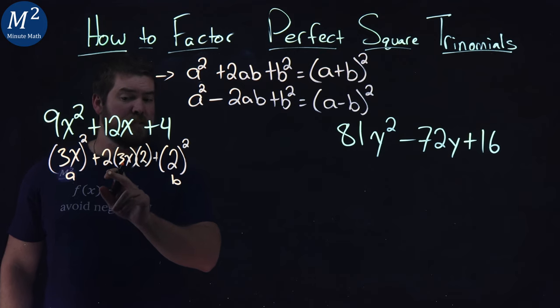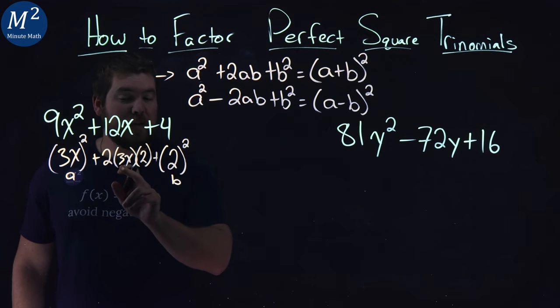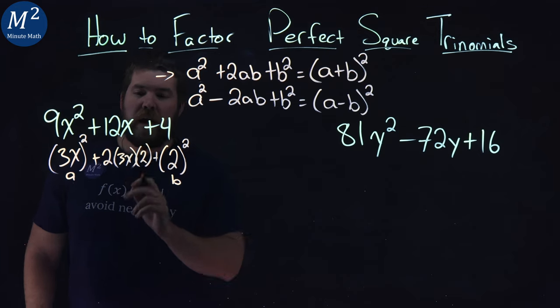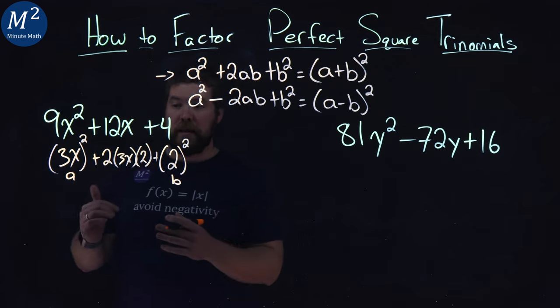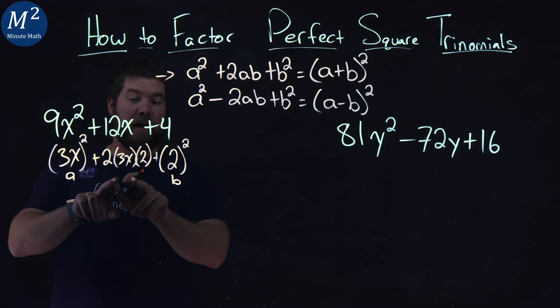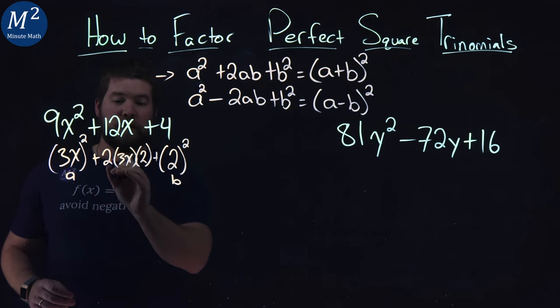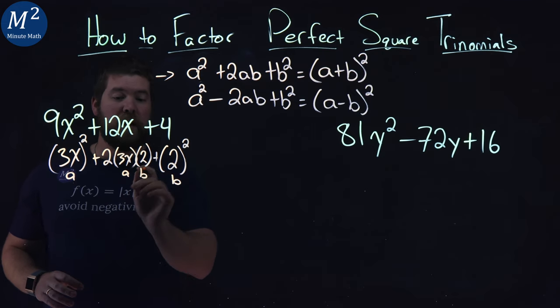Well, 2 times 2 is 4, times 3 gives me 12, and we would have 12x here. So we can rewrite this as we have it. We have 2 times an a value and our b value.